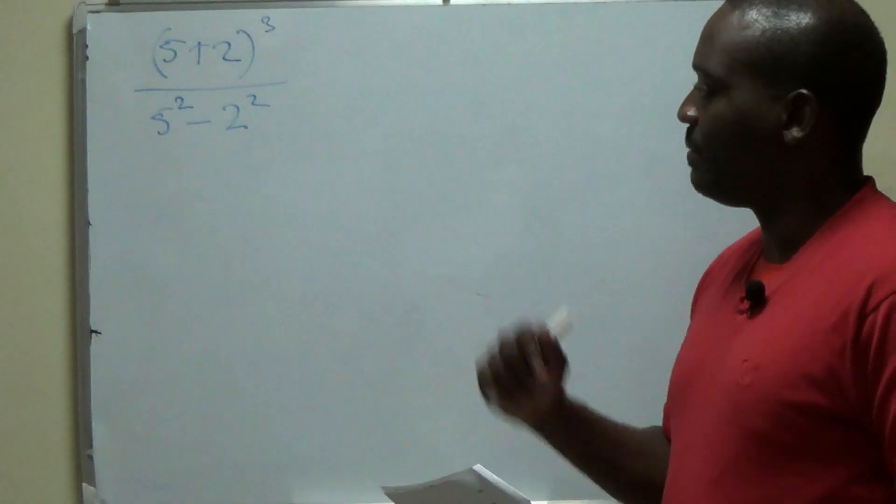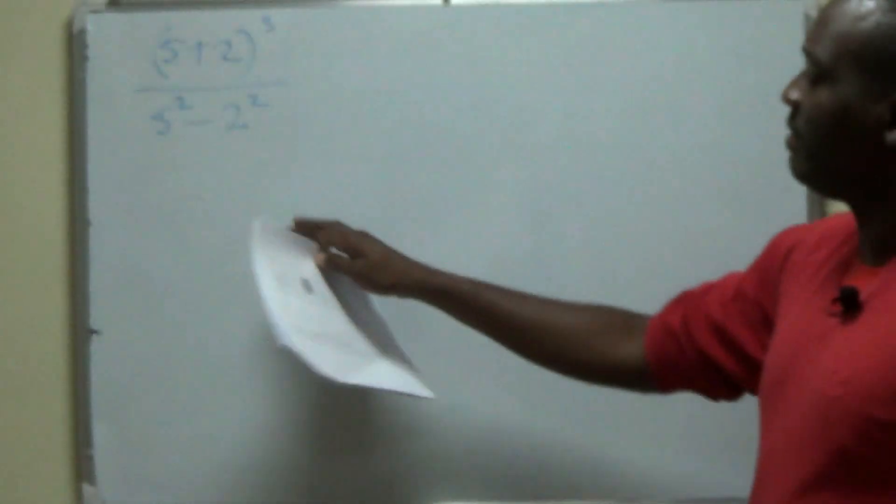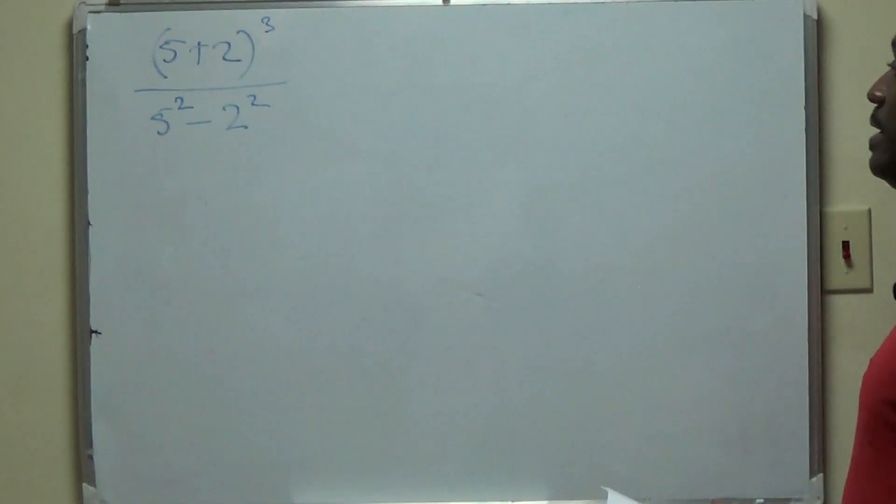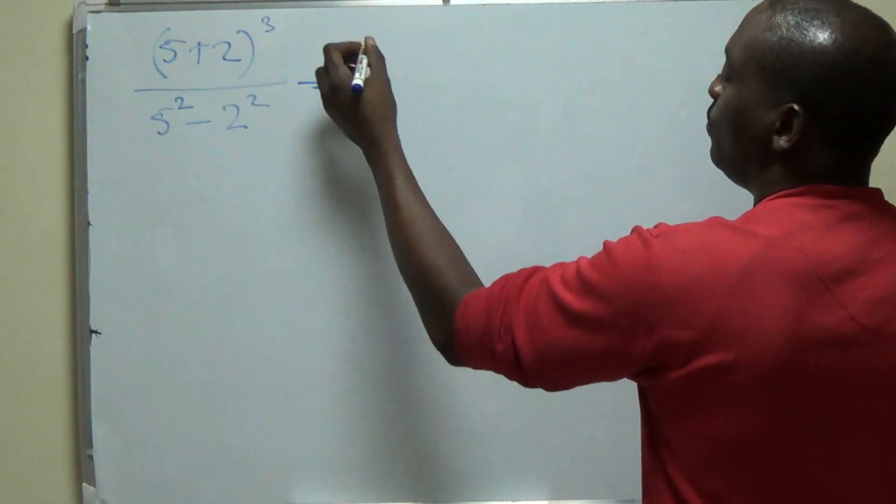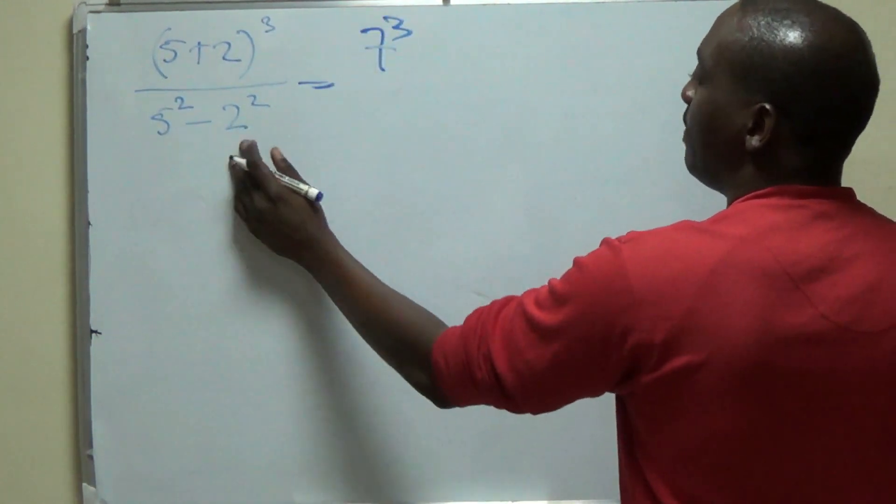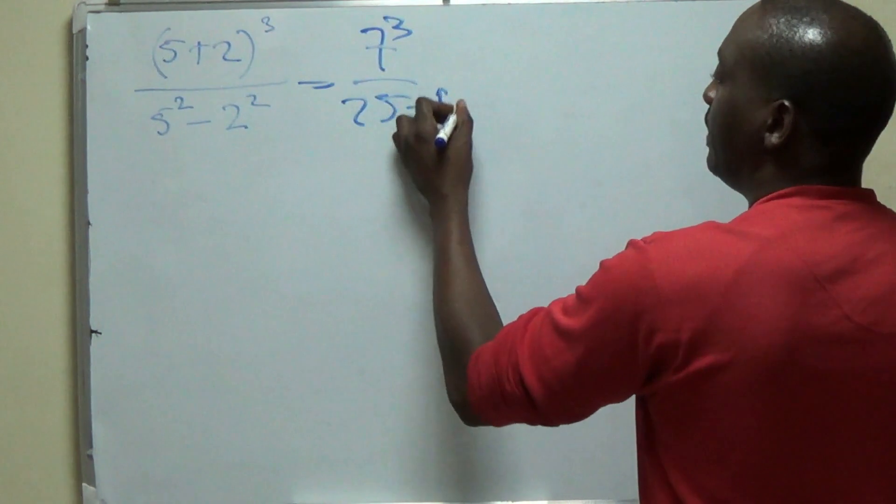Alright, so same question. We're working with a slightly different method now. So if you didn't recognize that this is the difference of two squares, what you would have to do is to say that 5 plus 2 cubed will be 5 plus 2 is 7 cubed. 5 squared minus 2 squared is 25 minus 4.